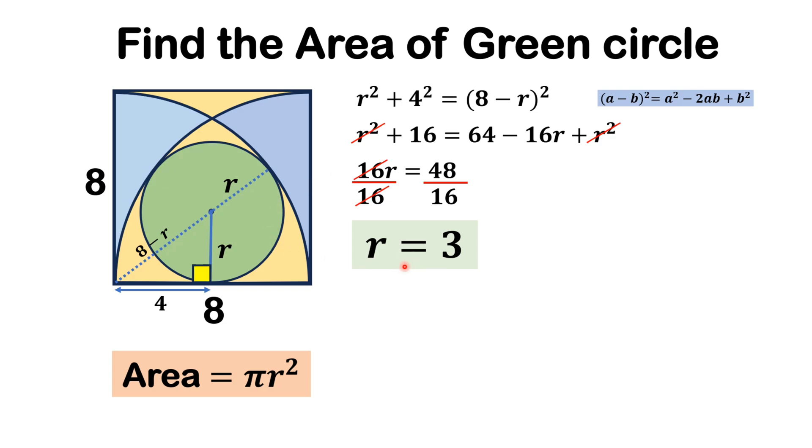Now, substituting the value of r in this equation, we will find area of the circle is equal to π times 3 squared, and thus, area is equal to 9π.